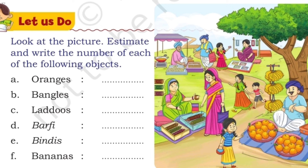Look at the picture. Estimate and write the number of each of the following objects. We have a market here with oranges, bangles, laddus, barfi, bindis, and bananas. We need to count each of them.